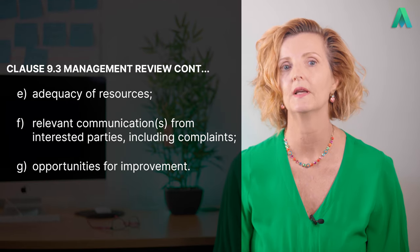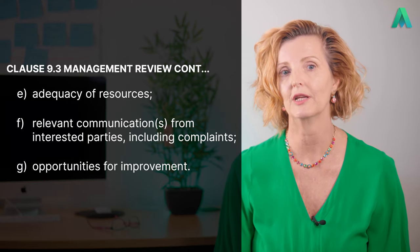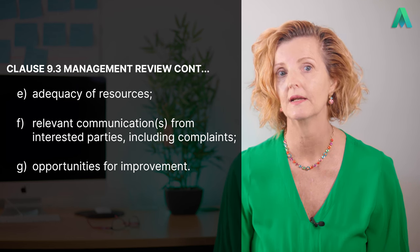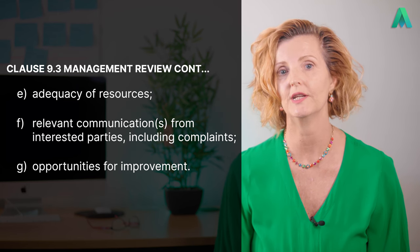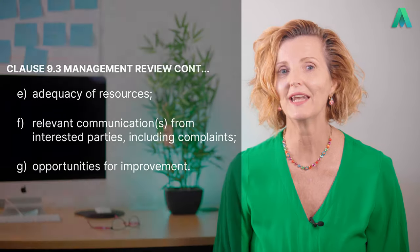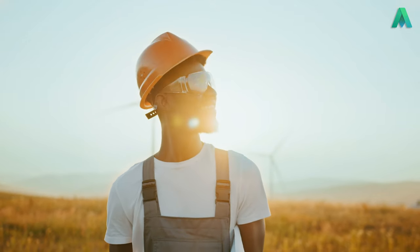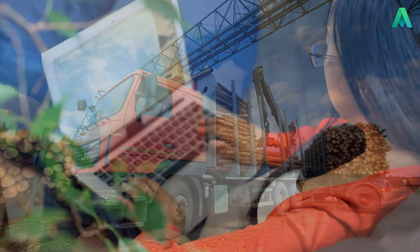There are three more considerations for this sub-clause: E, adequacy of resources; F, relevant communication from interested parties including complaints; G, opportunities for improvement. Top management need to review whether there are sufficient resources to maintain and improve environmental management system performance. Resources can be people, equipment, hardware, software, tools and communication requirements. To assist in understanding this, refer to Clause 7.2, competence.